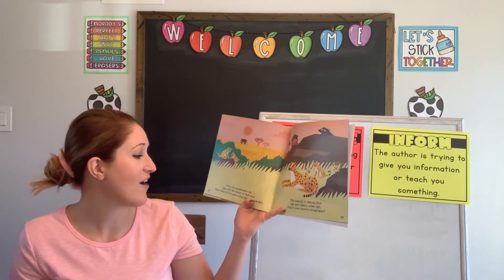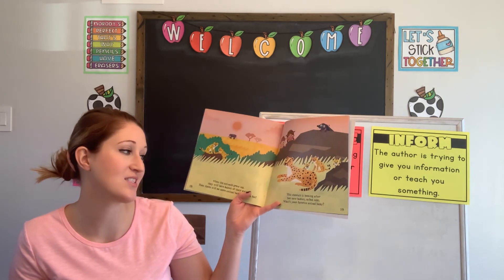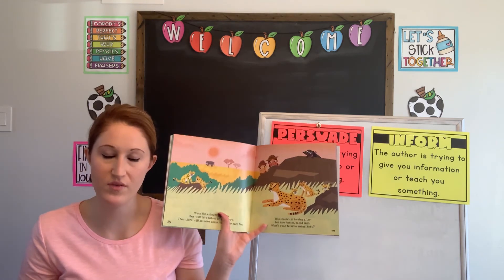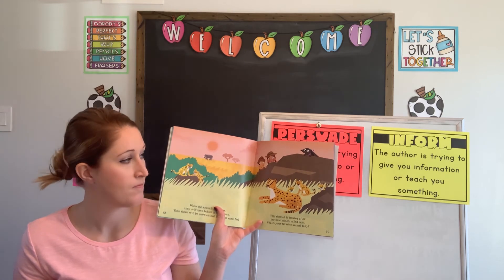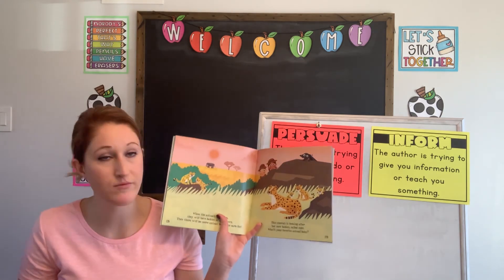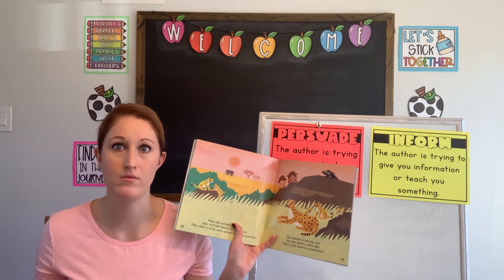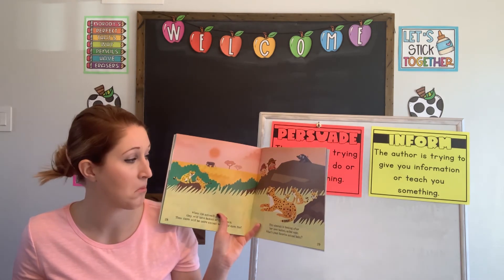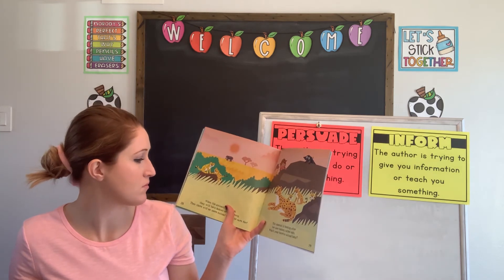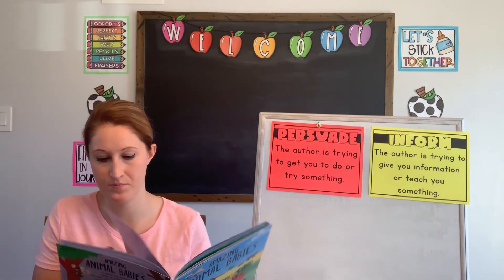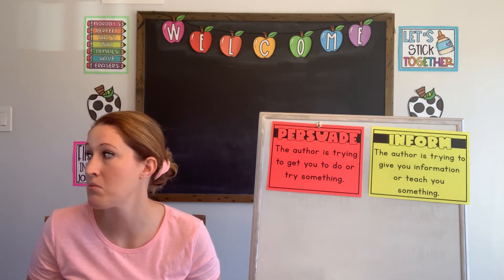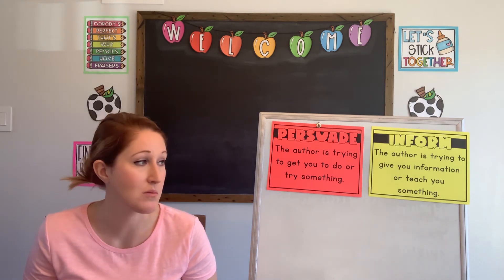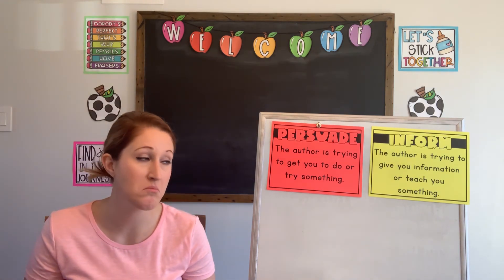When animals grow up, they will have babies of their own — there will be more animal babies to care for. This cheetah is looking after her new babies called cubs. What's your favorite animal? Looking at this picture, it reminds me of the new little baby cheetahs at the zoo that were born not too long ago. Have you been to the zoo to see them? They're pretty cool. Do you have a favorite baby animal? I like a lot of baby animals, but I think baby puppies might be one of my favorites.